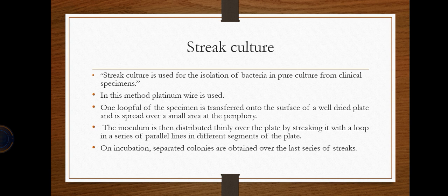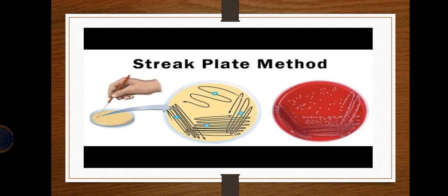Streak culture is used to isolate bacteria in pure culture from clinical specimens. Using a platinum wire loop, we transfer a loopful of specimen onto the surface of a well-dried plate, spread it in a small area at a corner, then move the loop in parallel lines across different segments of the plate. After incubation, separate colonies appear over the last series of streaks.